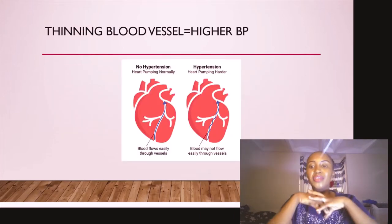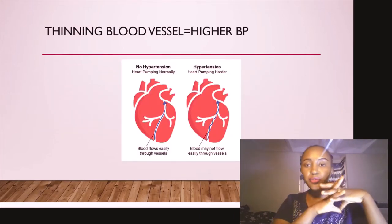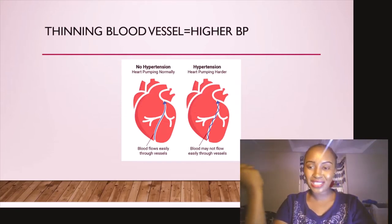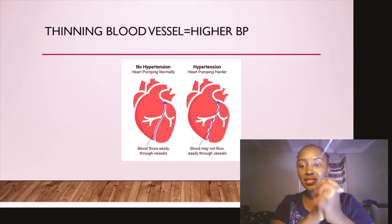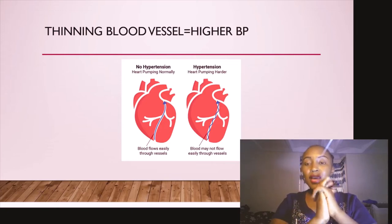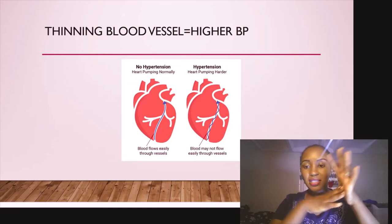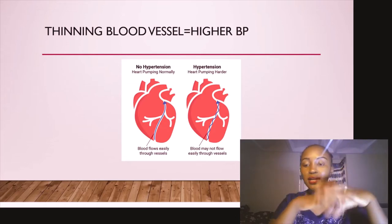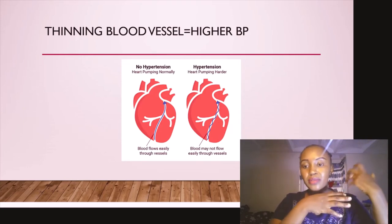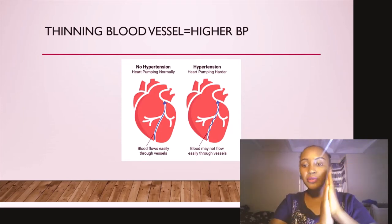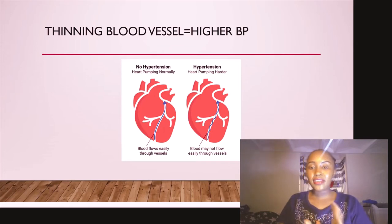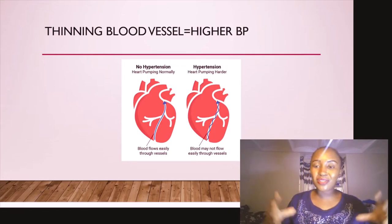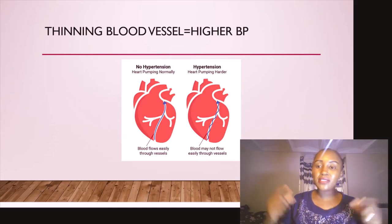For the physiology of high blood pressure, the heart is pumping harder than it usually does because the blood vessels — specifically the arteries, which carry blood away from the heart — have thinned. The veins bring blood back from the body to the heart. When the arteries get thinner than usual, the heart has to pump harder, and that means higher blood pressure.